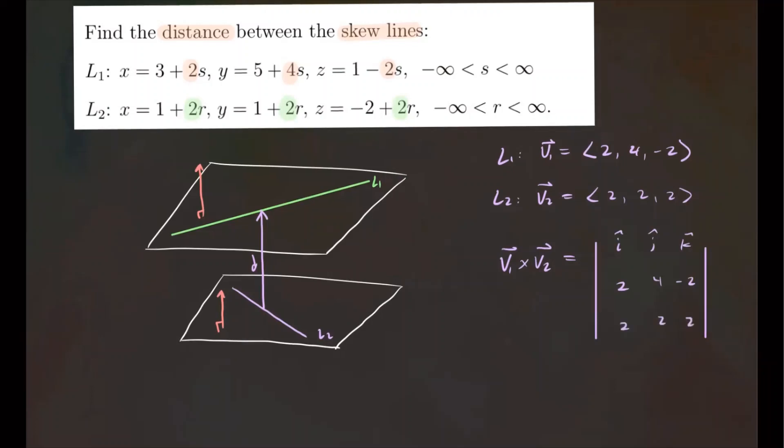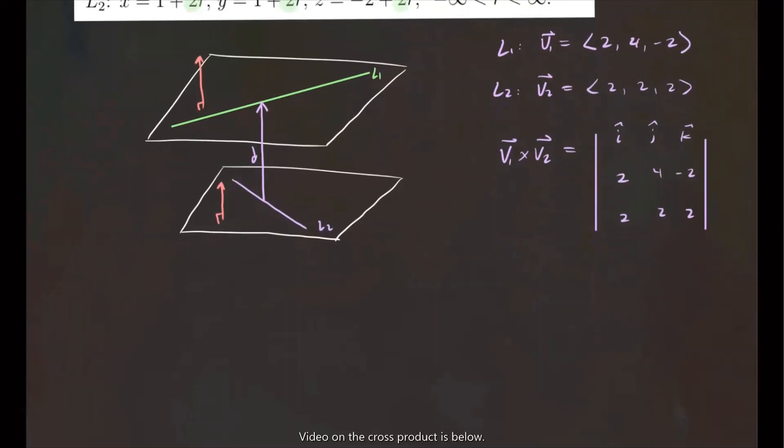All right, so now let's do the cross product. Again, if you need help, more detailed information about cross product, feel free to check out the link in the description box. So this vector, it's going to be 12I hat minus 8J hat minus 4K hat. So when you do the cross product, you're going to get this vector. Now, I'm going to call this vector the normal vector. Let's call it that because this is the normal vector because this vector is perpendicular to both V1 and V2. So that's this one right here.